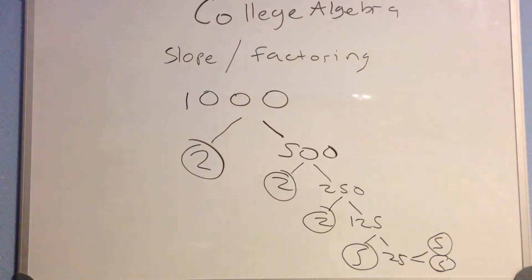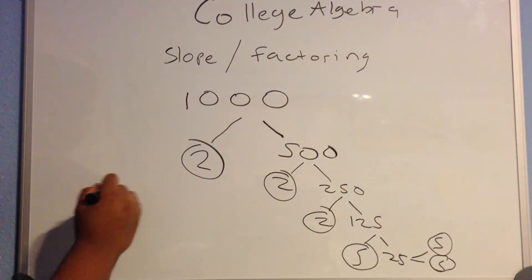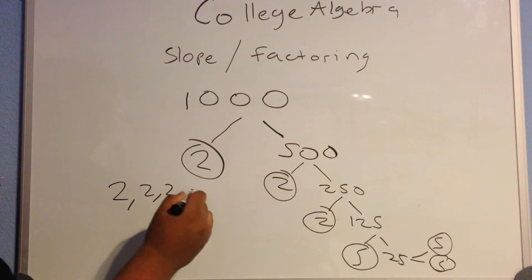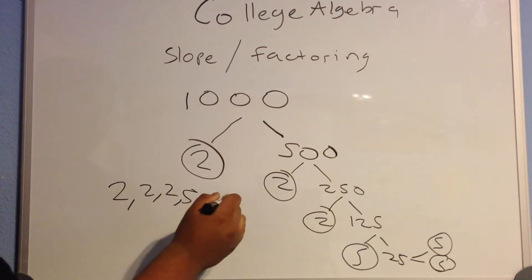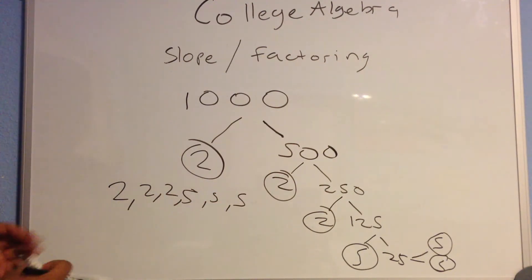The circle numbers are your prime factors, or essentially 2, 2, 2, 5, 5, and 5.